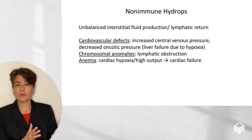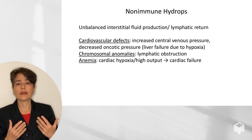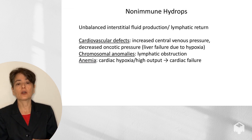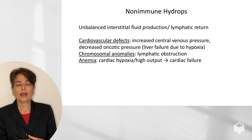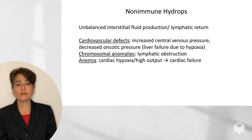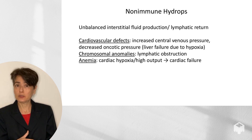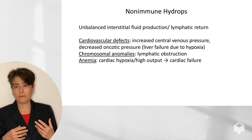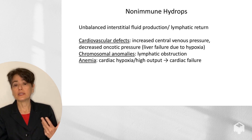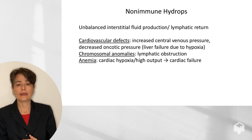That covers immune hydrops. Now let's focus on non-immune hydrops. As mentioned, this is caused by an imbalance between interstitial fluid production and lymphatic return. There are three big categories: cardiovascular defects, chromosomal anomalies, and anemia — but all ultimately come down to hydrostatic pressure and oncotic pressure. In cardiovascular defects, increased central venous pressure due to cardiac failure can occur. Decreased oncotic pressure results when the liver fails due to hypoxia and stops making albumin. Chromosomal anomalies can result in lymphatic obstruction, and anemias due to various factors can cause cardiac hypoxia and high-output cardiac failure.